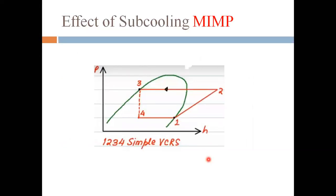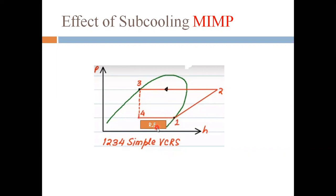First is the effect of sub-cooling. Before going into the effect of sub-cooling, we need to understand the pH diagram. We already discussed the pH diagram in the earlier lecture. In the pH diagram, that is the pressure-enthalpy diagram, this line is known as the saturated liquid line and this line is known as the saturated vapor line. The one-to-two process is compression, two-to-three is condensation, three-to-four is the expansion process, and four-to-one is the evaporator process where the refrigerating effect is produced. This W compressor represents the compressor work.